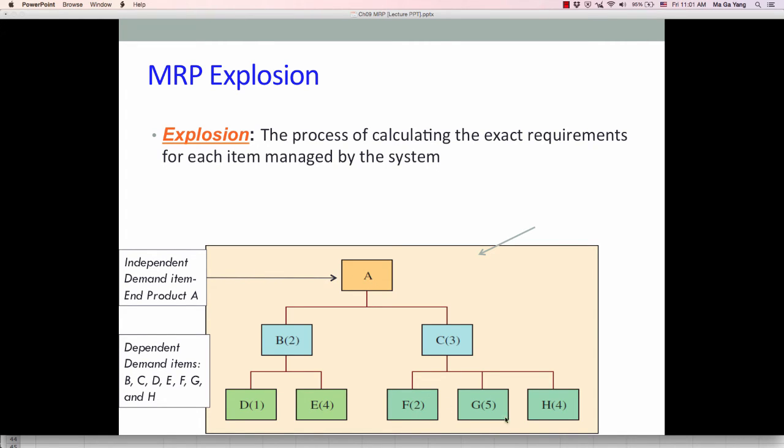In the similar way, this C side, in order to produce C, we have F equals 2C, 2 times 600, so 1,200 units of F. And G equals 5C, 5 times 600, 3,000 units of G. And H equals 4C, so 4 times 600, so 2,400 units of H are required in order to produce C. Then we are able to produce C. Then we are able to produce A.